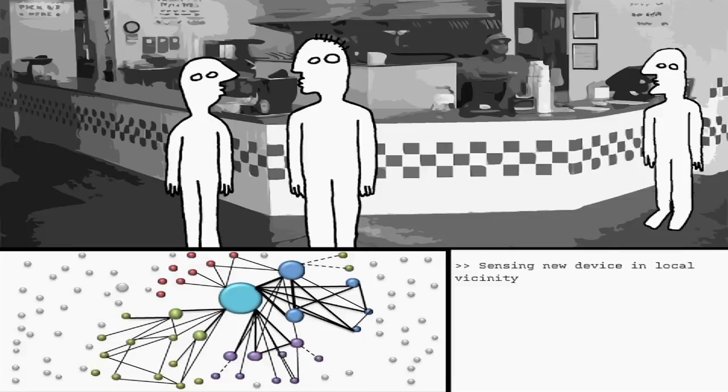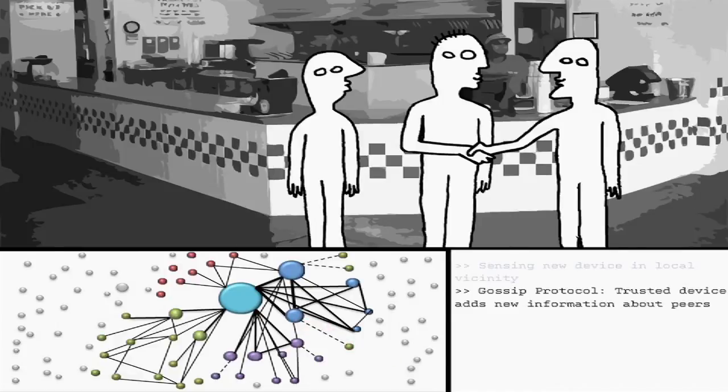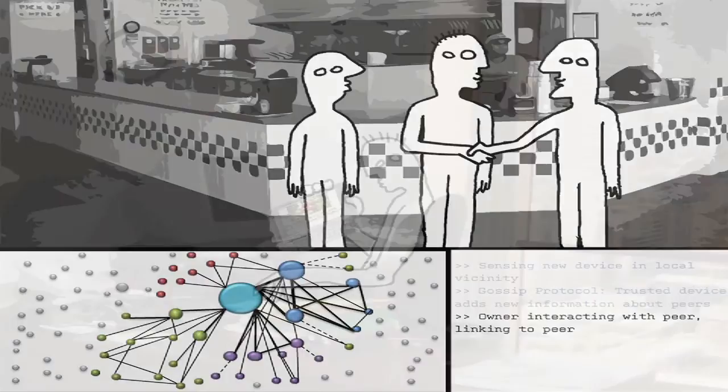Enrique's brother's device informed Enrique's device about the connection. Later, when Enrique and Bernardo directly talked to each other, it was sensed by their devices, and a direct link was formed between them.